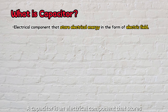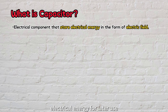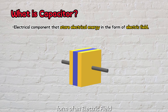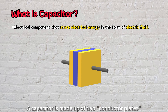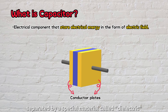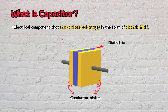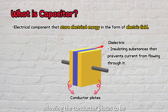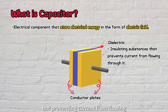A capacitor is an electrical component that stores electrical energy for later use. It's like a special container that holds electrical energy in the form of an electric field. A capacitor is made up of two conductor plates separated by a special material called dielectric. This dielectric acts as an insulating substance, allowing the conductor plates to be very close to each other but preventing current from flowing directly between them.